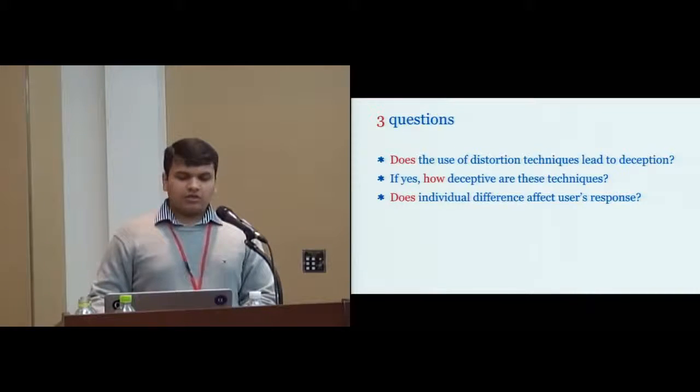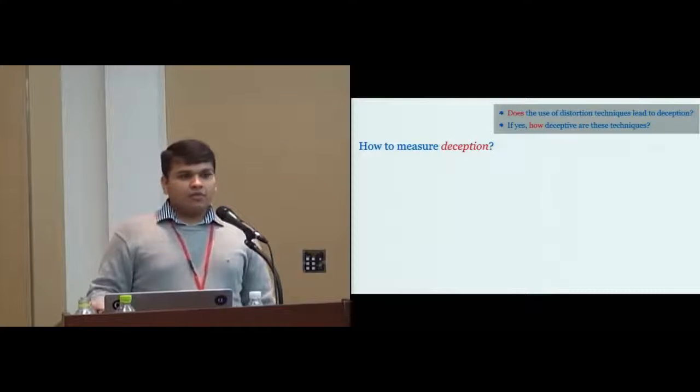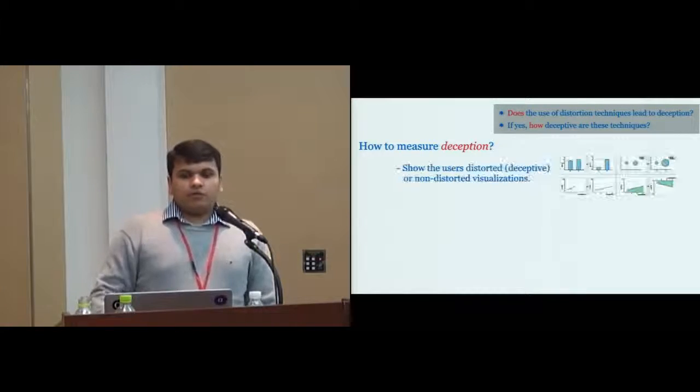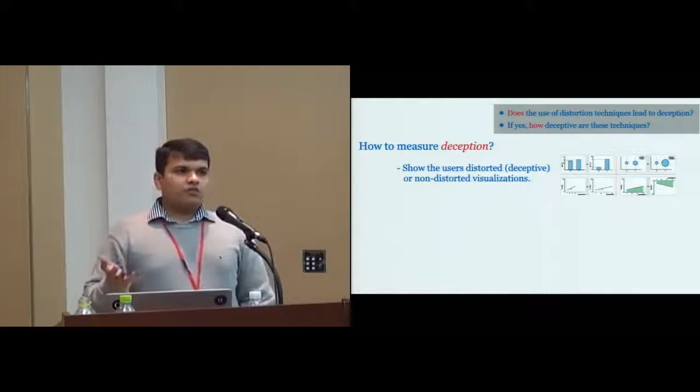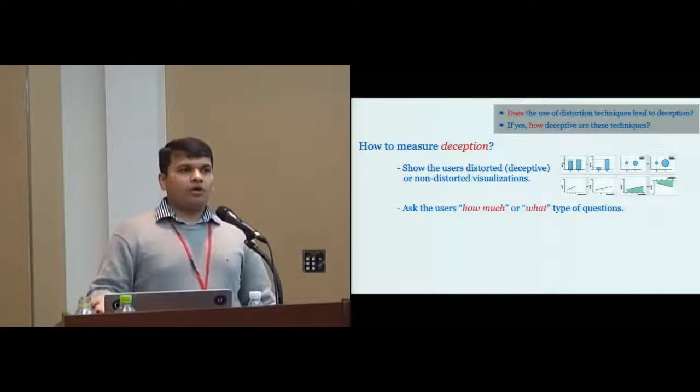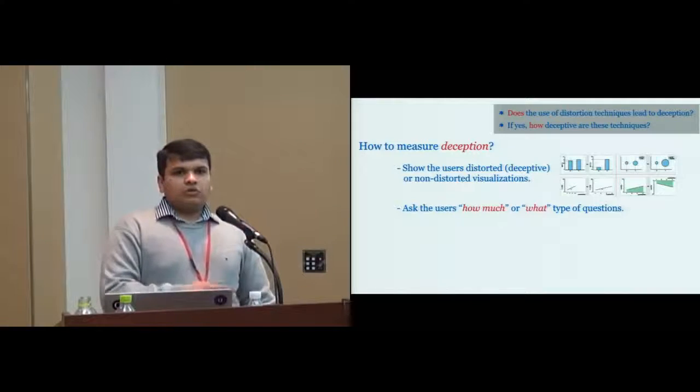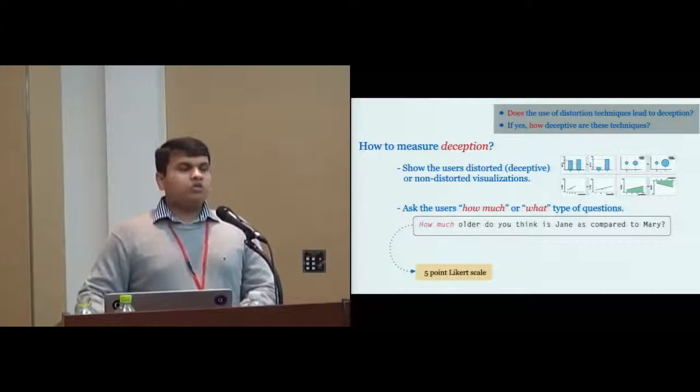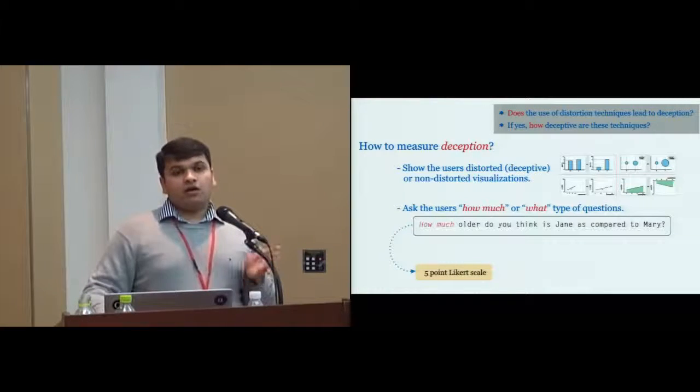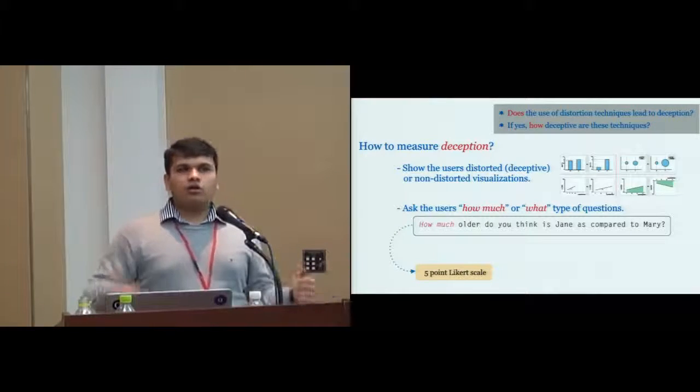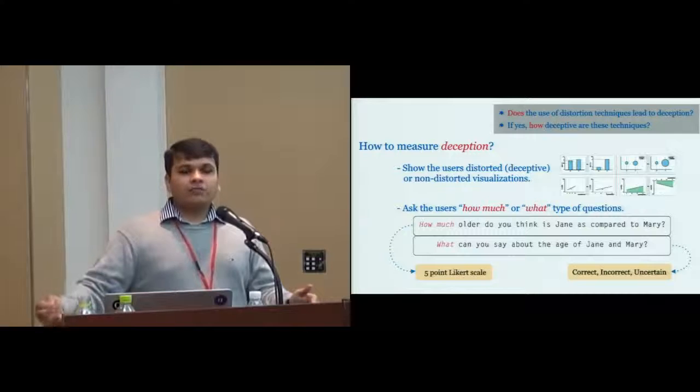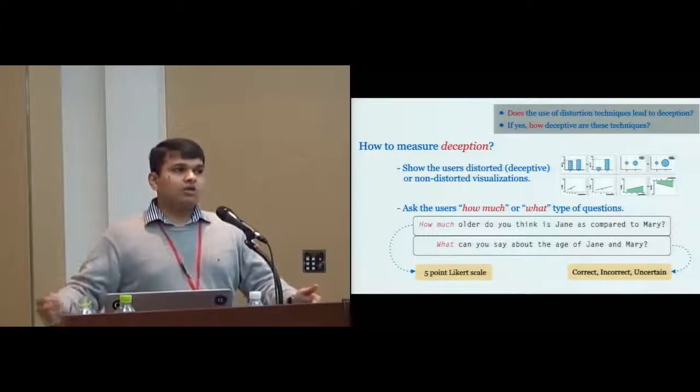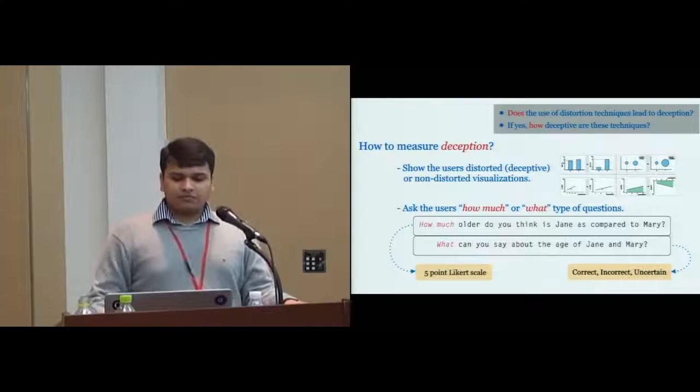To answer the first two questions, it's important to find a way to measure deception. We decided to show users either a deceptive or non-distorted version of a visualization. Based on what the user saw, we would ask a 'how much' or 'what' type question. For example, with the Mary and Jane example, I would ask 'how much do you think is Jane older compared to Mary?' and collect response on a five-point Likert scale, a qualitative interpretation ranging from 'not older at all' to 'significantly older.' Or I can ask 'what can you say about the ages?' with correct interpretation 'Jane is older than Mary', incorrect 'Mary is older than Jane', or 'I'm not certain at all.'